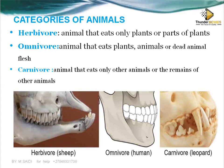Herbivores have teeth on the lower jaw but not the upper jaw, and they have spaces there, meaning they cannot tear meat — that's why they can only feed on plants. Omnivores have teeth that help them eat both plant and animal material. Carnivores have teeth designed to help them tear meat — their canines help tear meat so they can feed on it. By looking at the arrangement of teeth, you can identify whether an animal is a herbivore, omnivore, or carnivore.